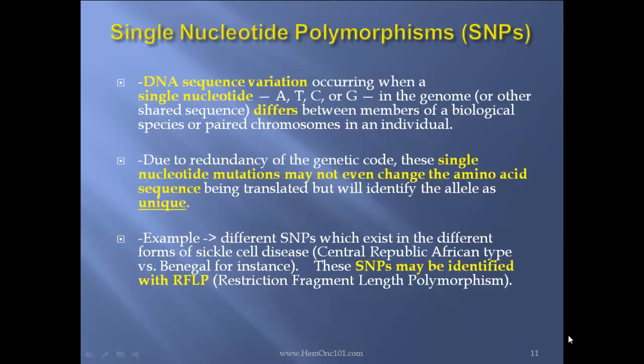Single nucleotide polymorphism, called SNPs: DNA sequence variation occurs when a single nucleotide — A, T, C, or G — in the genome or other shared sequences differs between members of a biological species or paired chromosomes in an individual. Due to redundancy of the genetic code, single nucleotide mutations may not even change the amino acid sequence being translated, but will identify the allele as unique. An example: different SNPs exist in different forms of sickle cell disease — for instance, Central African Republic type versus Benin type. These SNPs may be identified with RFLP, restriction fragment-length polymorphism.